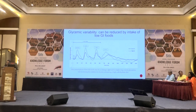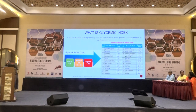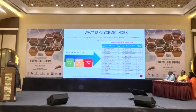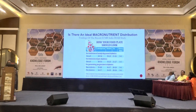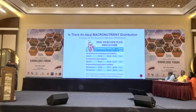Glycemic index and, even more importantly, glycemic load matter significantly. Glycemic load considers the amount of carbohydrate multiplied by the glycemic index of that particular food. In an ideal macronutrient distribution for remission of newly diagnosed diabetics: 49–54% carbohydrates, 19–20% protein, 21–26% fat, and 5–6% dietary fiber. For pre-diabetics: 50–60% carbohydrates, 18–20% protein, 21–27% fat, and 3–5% dietary fiber.